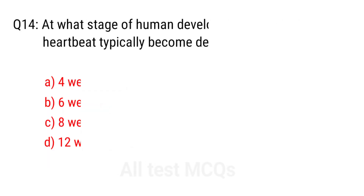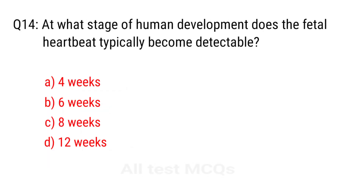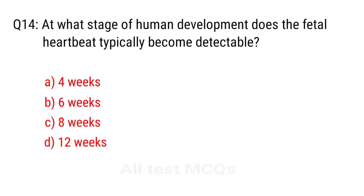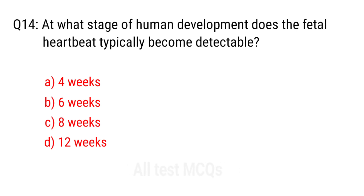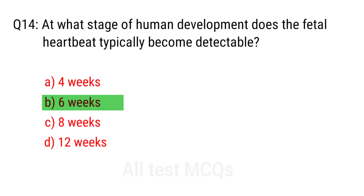Q14. At what stage of human development does the fetal heartbeat typically become detectable? The right answer is option B: Six weeks.